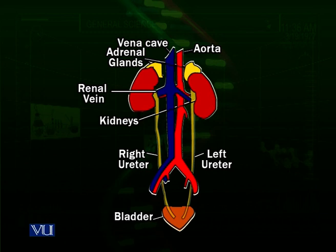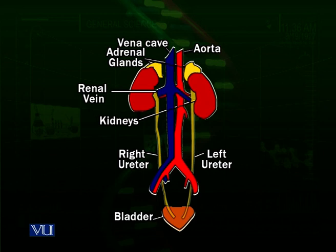One kidney is slightly higher or more anterior in position than the other. This difference is due to the presence of the large stomach on one side — because the stomach is a large organ, one kidney's position is slightly more posterior compared to the other, which is below the liver. The depression on the concave side provides space where the renal vein, renal artery, and nerves enter and leave the kidney.